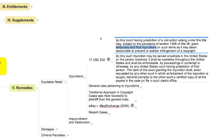Permanent injunctions, as their name suggests, are typically issued at the conclusion of a copyright infringement suit. Preliminary injunctions, as their name suggests, are issued by a court before the conclusion of the suit — often long before the conclusion of the suit — when it becomes apparent that the defendant will likely, in the end, lose, and that allowing the defendant's behavior to continue in the meantime would cause the plaintiff serious injury.